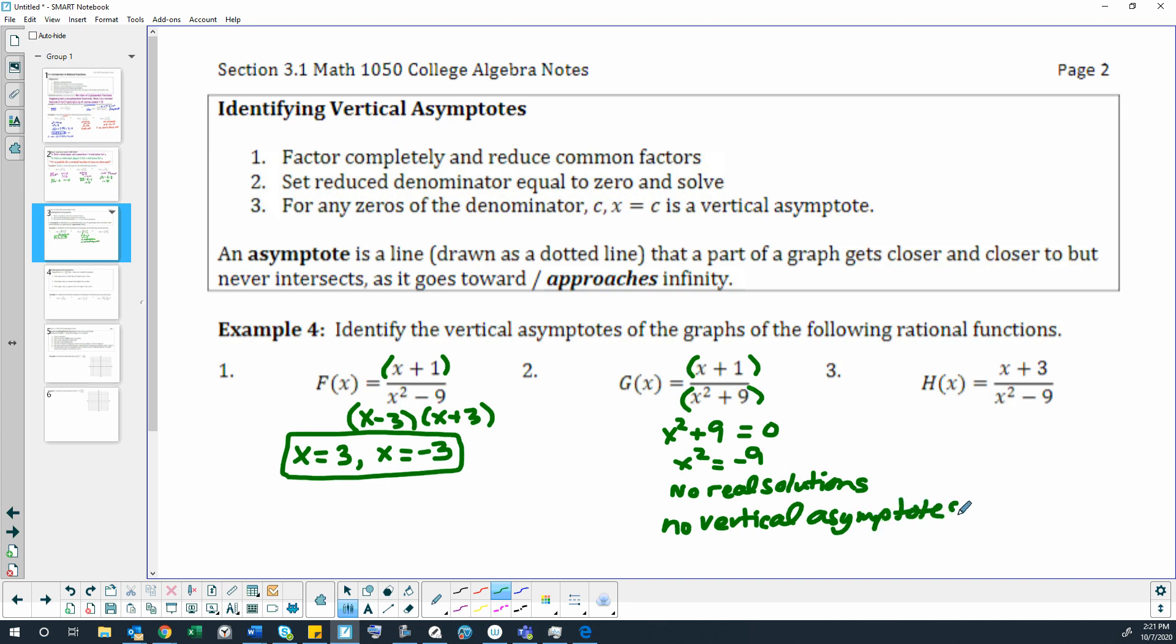Next example. In our next example, we have x plus 3 and then we can factor the denominator into x plus 3, x minus 3. Here's a good example of where we do have reducible factors. This x plus 3 and that x plus 3 can both cancel out. That doesn't leave us with 0 in the numerator. It leaves us with 1. That gives us 1 divided by x minus 3. That means we have a vertical asymptote at x equals 3.